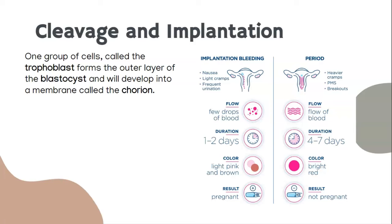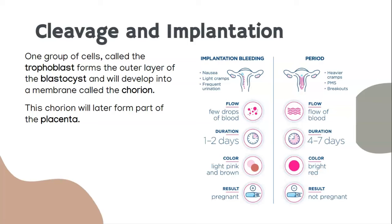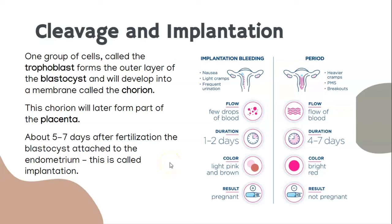I would like you to star all of this information: this trophoblast becomes something called the chorion. The chorion will later become the placenta. So the key stages are: a trophoblast becomes a chorion, and a chorion becomes a placenta. About five to seven days after fertilization, we have attachment to the endometrium, and we call this implantation. Implantation is fully completed between the 10th and 14th day.